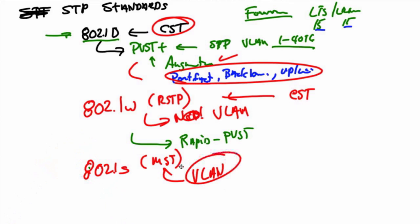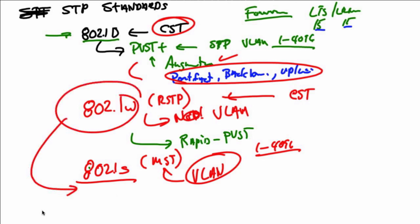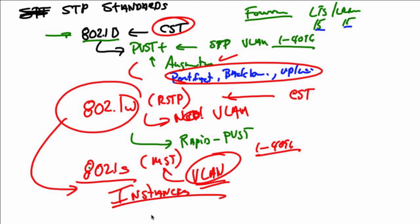The standards body probably should have accepted VLANs sooner. However, to support 1 to 4096 VLANs is just simply insane. So what the standards body came up with in 802.1S took everything in 802.1W for Rapid and incorporated it, but instead of individual VLANs they called it instances — with instance zero always present by default. An instance is basically just a VLAN mapping to a particular instance, and you can create other instances to support traffic.